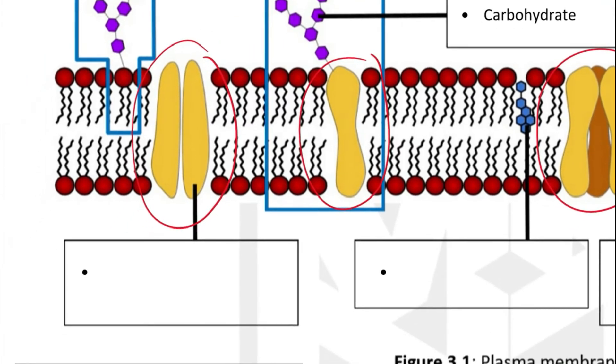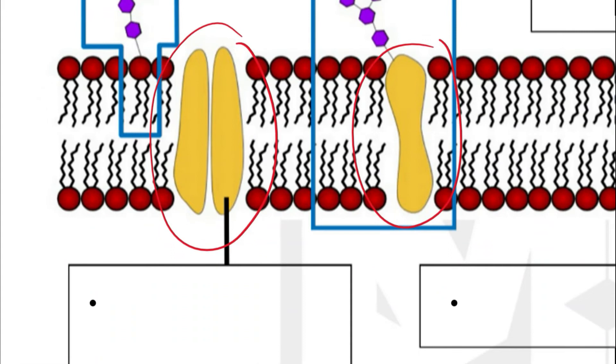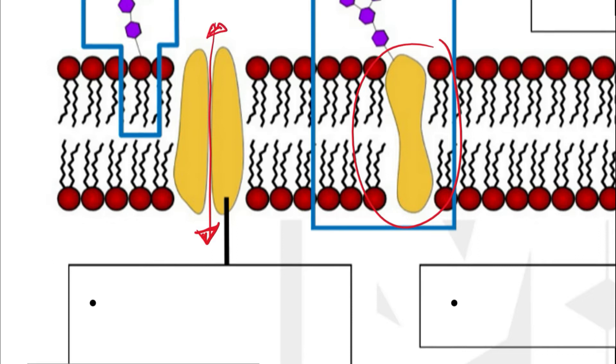And this protein in particular, you can see there is a channel in the middle. There's a space in the middle to allow substances to move across in and out. And therefore, this is known as the channel protein, since it has a channel to allow substances to move in and out.